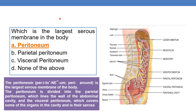Which is the largest serous membrane of the body? The answer is the peritoneum. Peritoneum is the largest serous membrane of the body. 'Peri' means around. The peritoneum is divided into two layers: parietal peritoneum, which lines the walls of the abdominal cavity, and visceral peritoneum, which covers some of the organs in the cavity — it corresponds to the serosa layer.